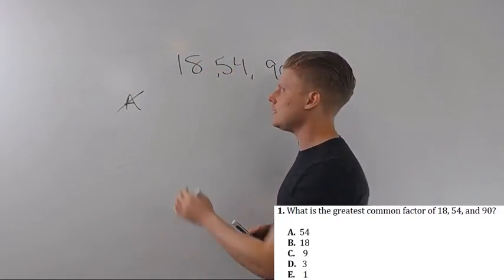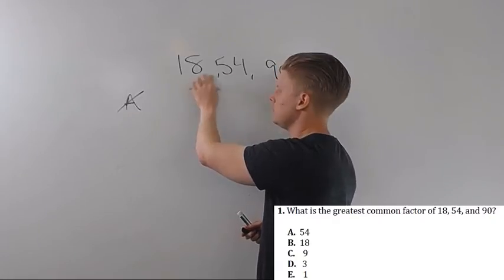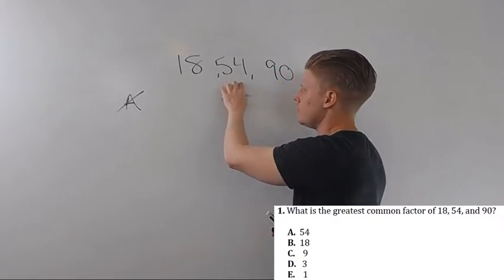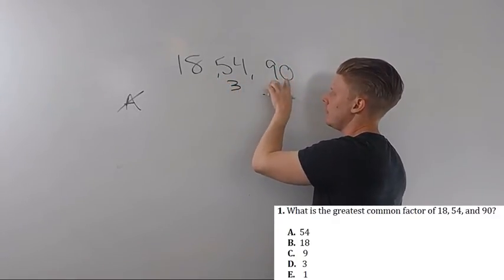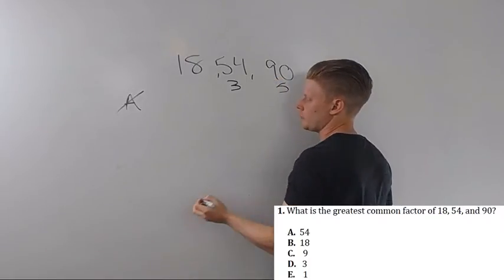And then I would start with 18 and check it. 18 divided by 18, that works. 18 into 54, that goes three times. 18 into 90, that goes five times. So B is correct.